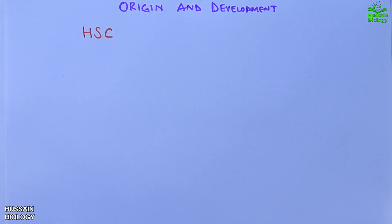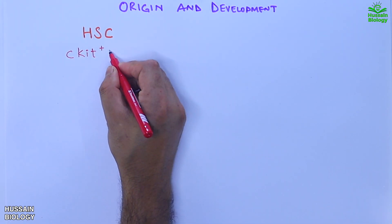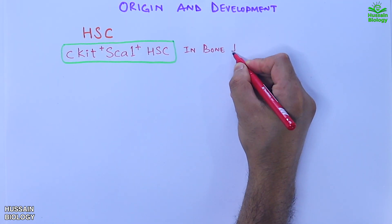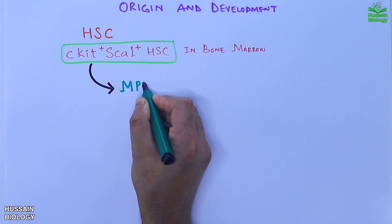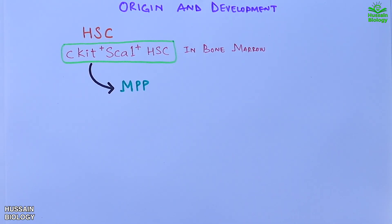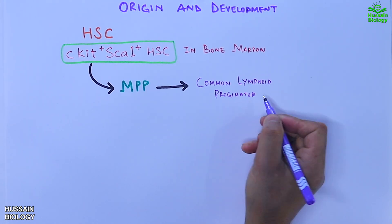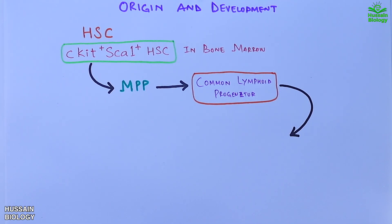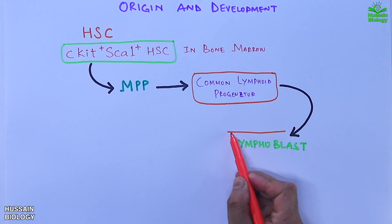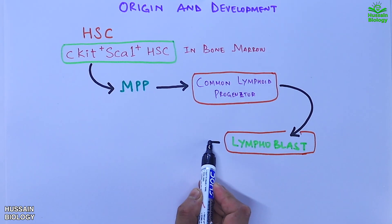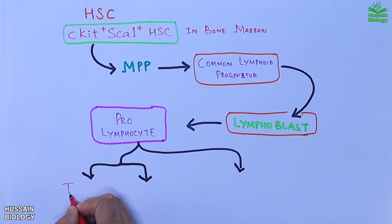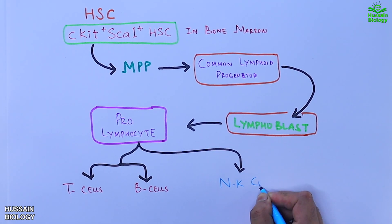Regarding the origin and development of T cells, they originate from HSC — specifically the Sca-1 positive, c-Kit positive HSC cell present in the bone marrow. This stem cell gives rise to MPP (multipotent progenitor), which in turn gives rise to common lymphoid progenitor (CLP). From CLP we get the lymphoblast cell, which transforms into pro-lymphocyte, and finally from the pro-lymphocyte we get T cells, B cells, and NK cells.